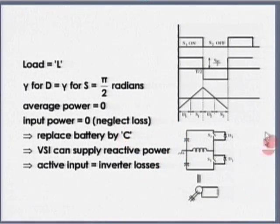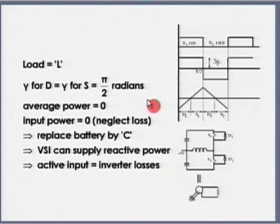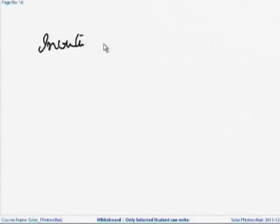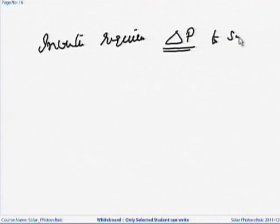You require delta P to sustain and account for losses while supplying Q. So this active power delta P has to come either from the AC grid or I need an active source to supply this power. The important result is: an inverter requires delta P to supply Q. In a grid-feeding inverter, if we know how to connect the inverter to the grid, the inverter can supply reactive power Q.